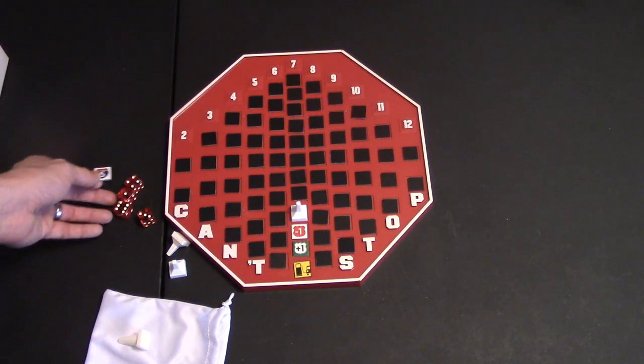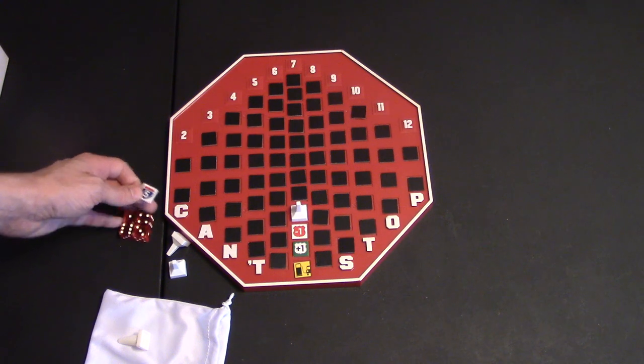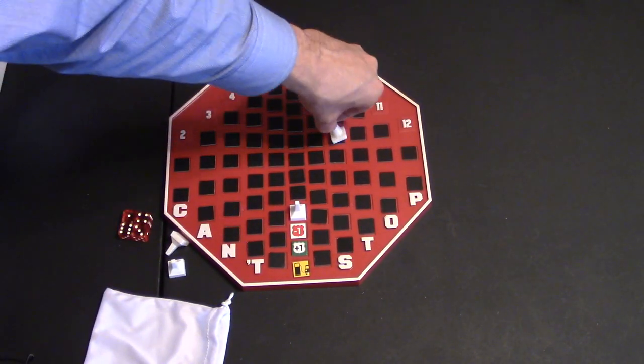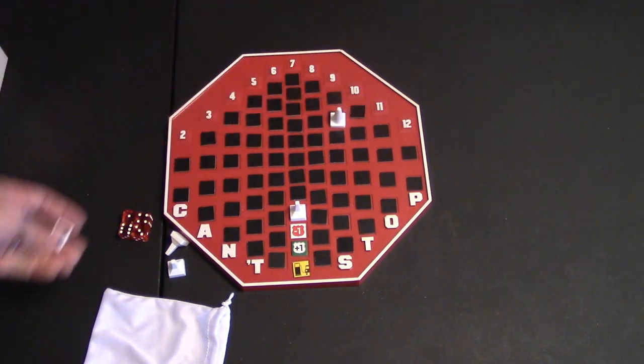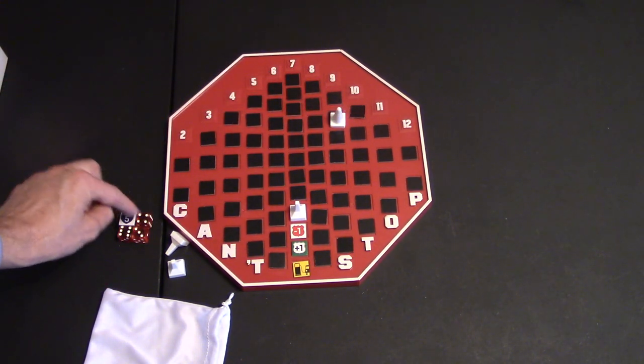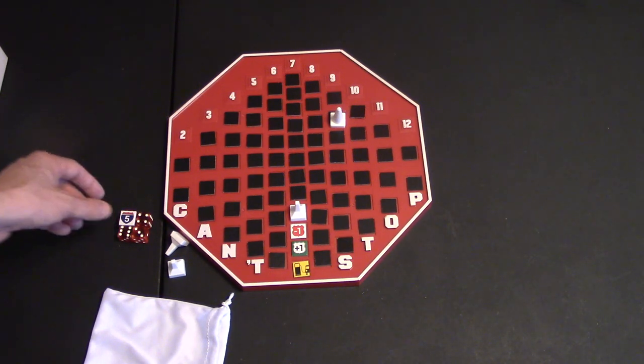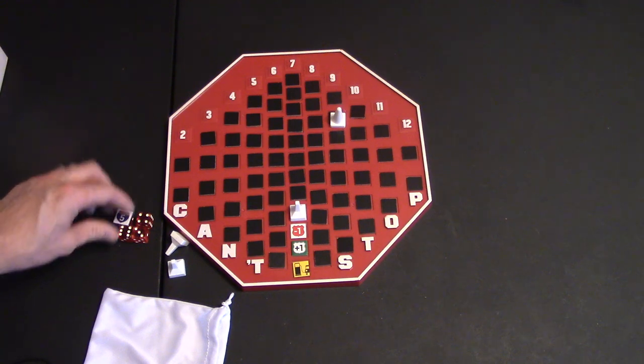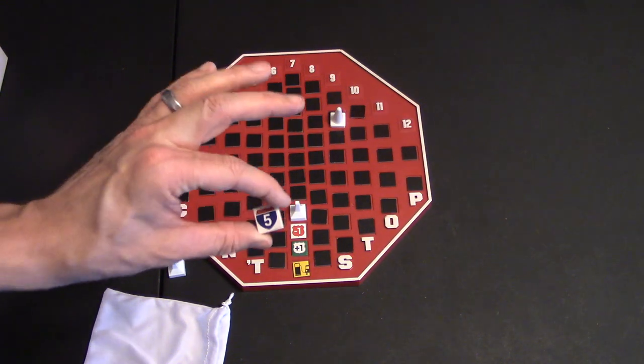Let's say I really wanted to get two 9s. I was in the 9s there, and I'm very close to getting on that 9. So, I rolled one 9. Well, I can use my 5. 5 plus 4 is 9. Now, the thing is, with these, you can only use one of them per turn.